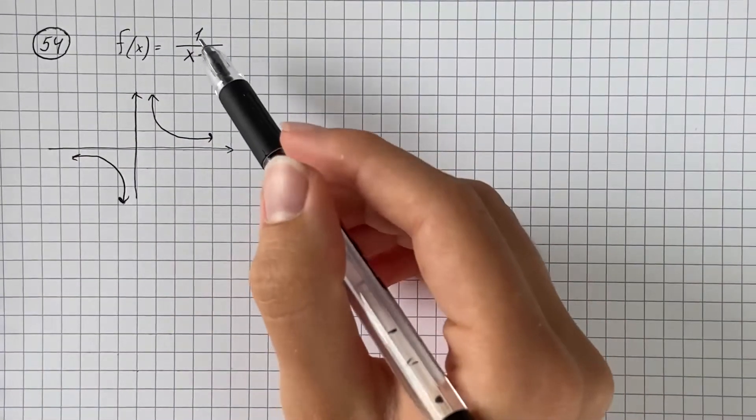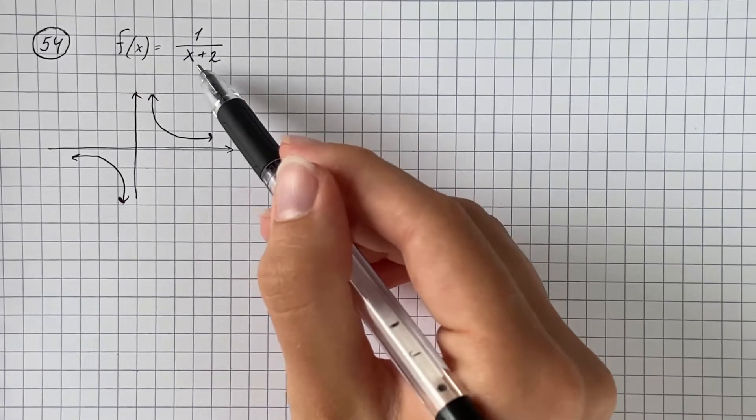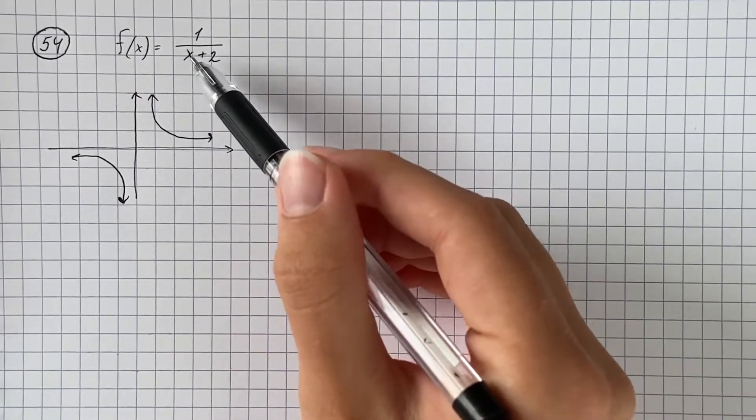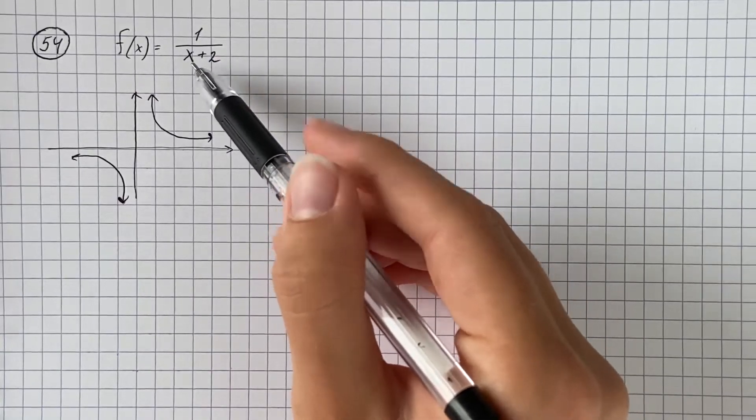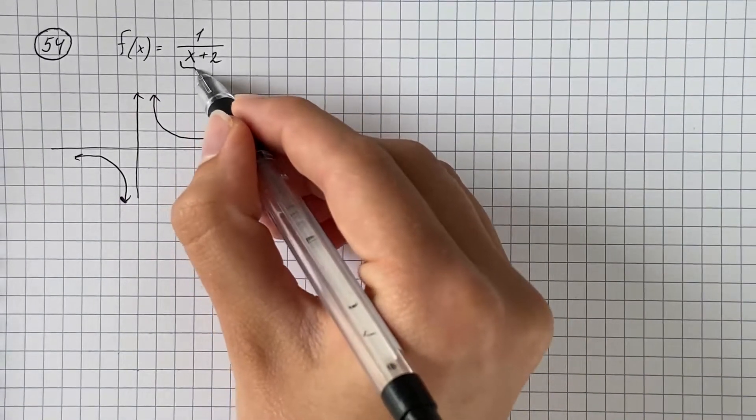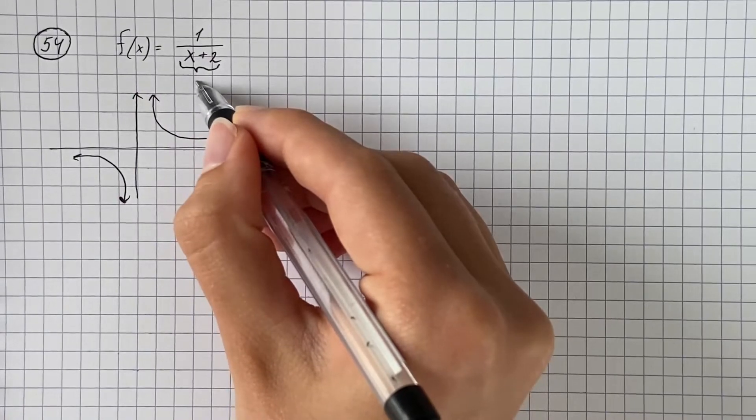And instead of 1 over x, we have 1 over x plus 2. So we replace the x with x plus 2, and that's going to shift our graph of 1 over x to the left two units.